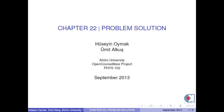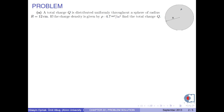Hello everyone, I am Imital Koush. In this video, we will solve one problem in Chapter 22. A total charge Q is distributed uniformly throughout a sphere of radius r equal to 12 cm. If the charge density is given by rho equal to 4.7 mC per m³, find the total charge Q.